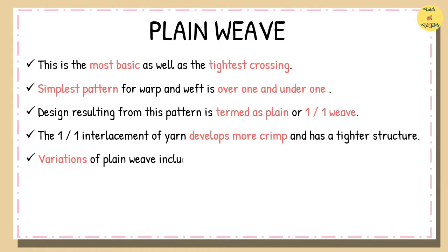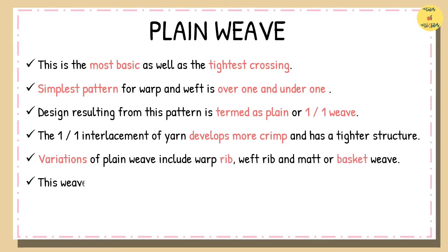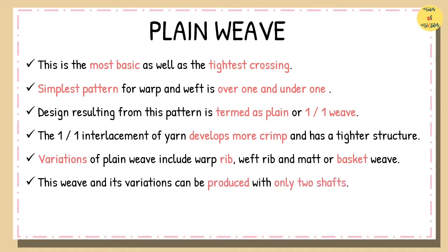The variations of plain weave include warp rib, weft rib, and mat or basket weave. The plain weave and its variations can be produced with only two shafts. This pattern is also called tabby or linen weave.